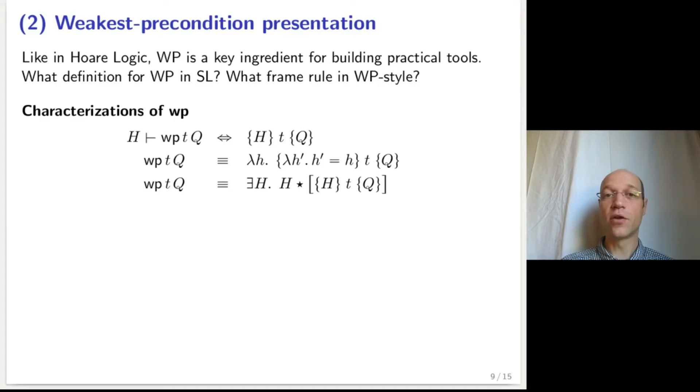So WP, just like in Hoare logic, can be defined as an equivalence between a triple H-TQ and the entailment from H to WP-TQ. This equivalence is not quite a definition. There are two definitions that can be considered. One is a low-level definition, working in terms of heaps, and another one is based on an encoding using the operators of separation logic.